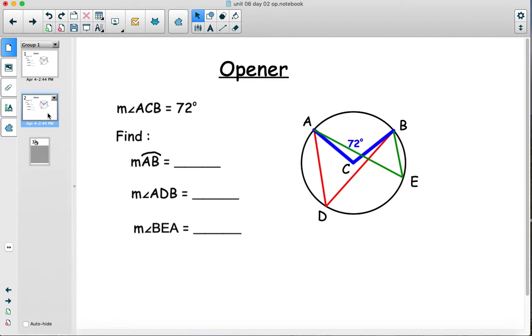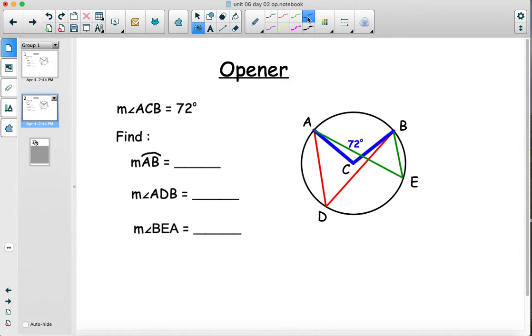So let's start off with, if you know the central angle is 72 degrees, then you know the arc that that angle goes to. I'm going to draw that in blue as well. That arc has the same measure, so that's 72 degrees as well.